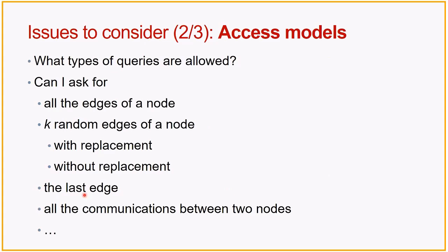The other issue is what kind of access model do you have. You're going to spend some money — either going to an Oracle, which costs a lot, or you go to an API like a Twitter API and ask questions. What kind of questions can you ask and what kind of answers do you get? For example, when I ask about Tina, do I get all of Tina's friends? Do I get a random K of Tina's friends? Do I just get the last person Tina talked to? Or when I ask about Tina and Bob, do I get the full communication channel between them? Depending on what access model you have, that will impact whether you can learn a policy, what kind of policy you want to learn, and certain pitfalls you have to look for.